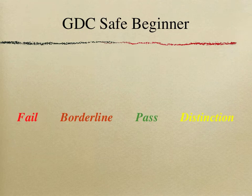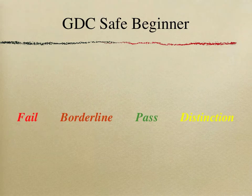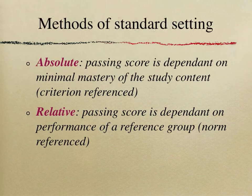The borderline candidate is a student who is just minimally competent — not brilliant, not average, but just fine and minimally competent — in order to ensure we are complying with the General Dental Council's guidelines on safe beginners. Within this series I will be going through a variety of methods used to standard set a given examination scenario, and I will generally divide them into two groups: the absolute and the relative methods.